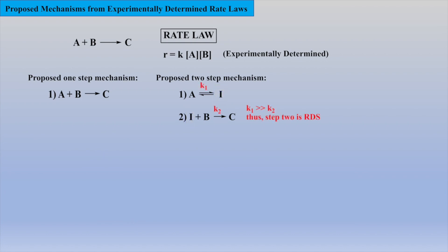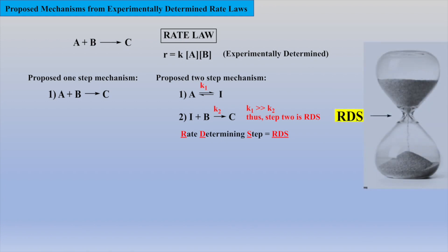Also, the slowest step within the proposed mechanism is the rate-determining step, or simply the RDS, which determines how quickly reactants can become products and usually has the highest activation energy and/or the smaller rate constant. Think of the RDS as the bottleneck of the reaction sequence, which is analogous to the narrowest point of the hourglass.